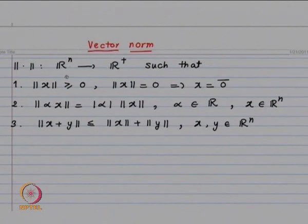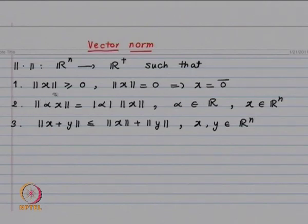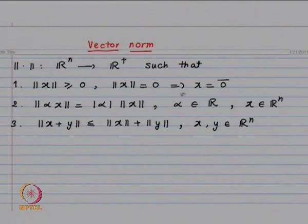Let us define a norm. x is going to be a vector in Rⁿ, and a norm is a function from Rⁿ to R⁺, where R⁺ is all non-negative real numbers. It should satisfy: norm(x) ≥ 0, and norm(x) = 0 should imply x is the zero vector, and conversely, x equals the zero vector should imply norm(x) = 0.